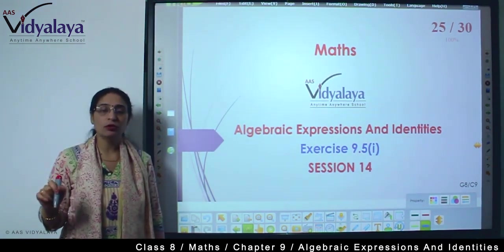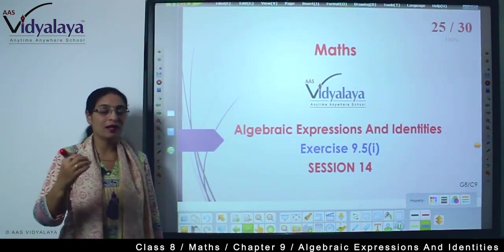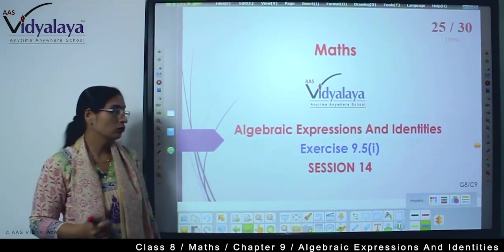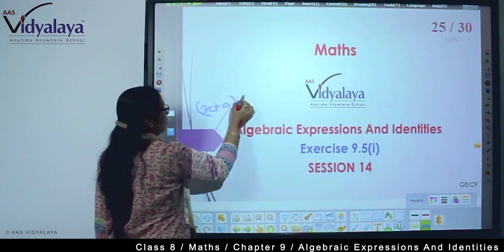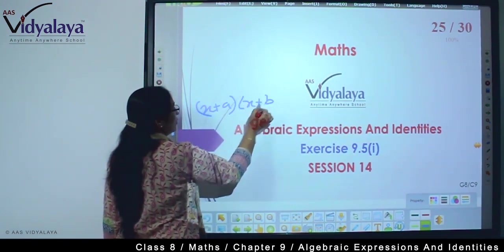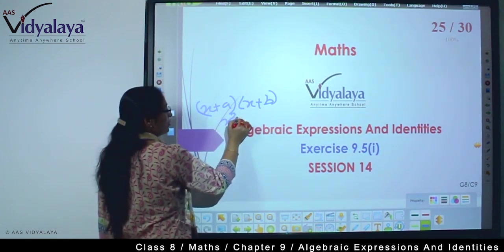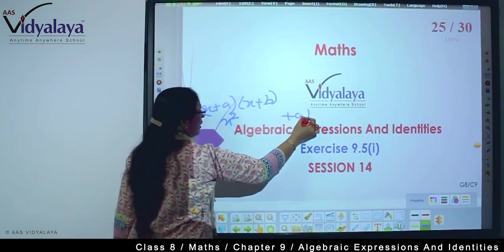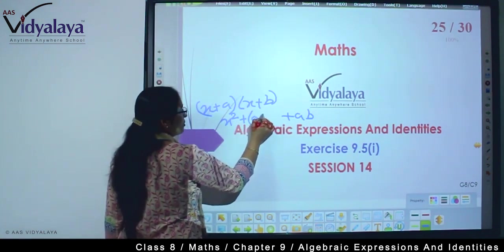Fourth special identity: (x+a)(x+b) is equal to... let's see. If we say it like this you might get confused, so let's look at it once. (x+a) and (x+b) - what comes? Our x², then ab, and here we'll do a+b times x.